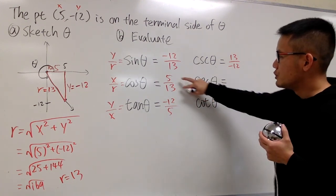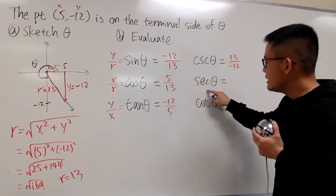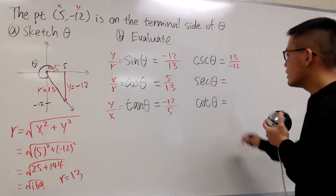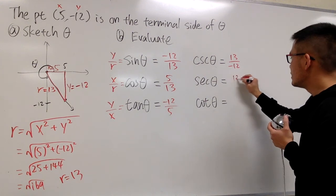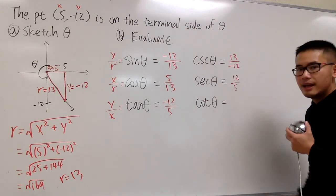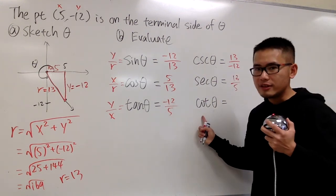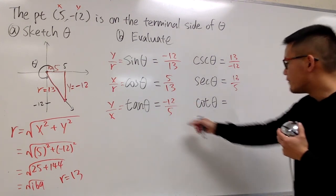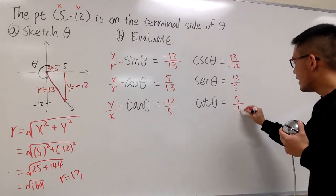Next, we have secant theta, which is just a flip of that. Secant theta is just a reciprocal of cosine theta. So, we'll just turn this into 13 over 5. And the last one, cotangent theta is just the flip of the original tangent. It will be 5 over negative 12.